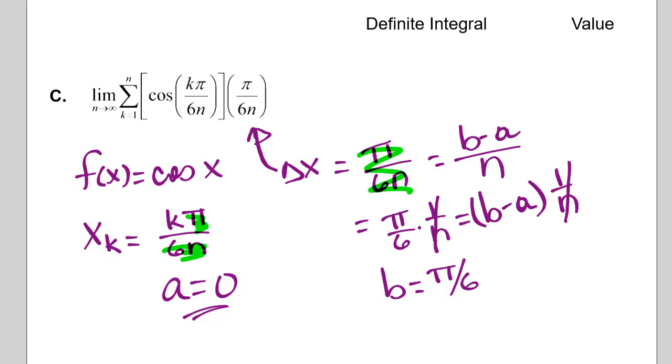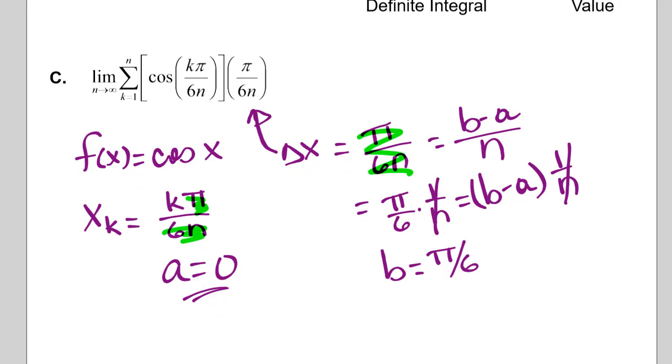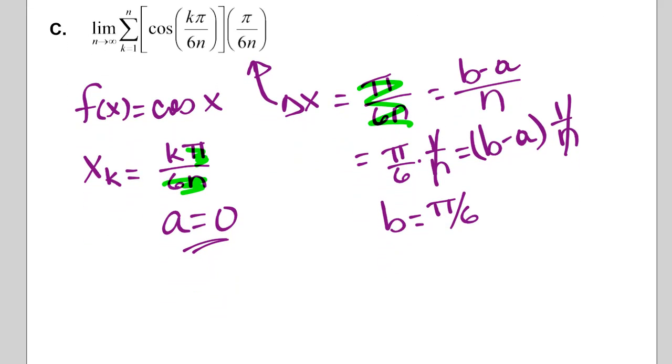So we've got our function, and we've got our limits of integration, a and b. So we can rewrite this Riemann sum as the integral from 0 to pi over 6 of cosine x dx. All right. I'll demonstrate this one on the calculator for us.